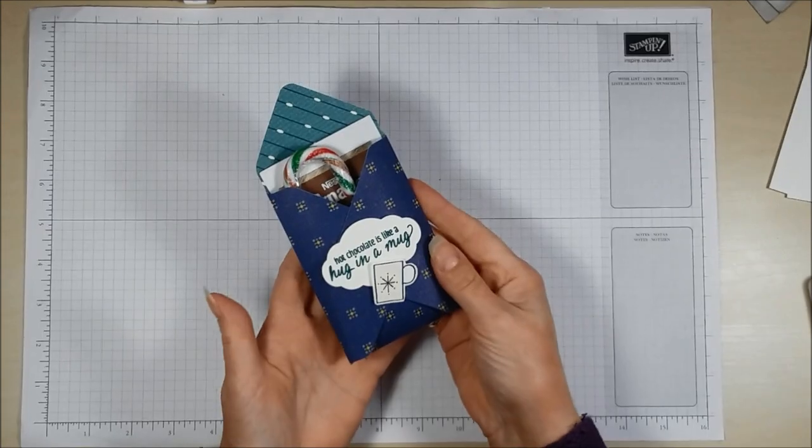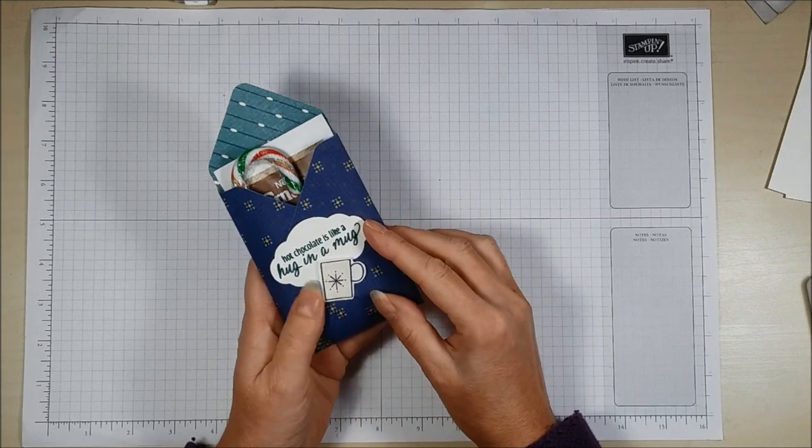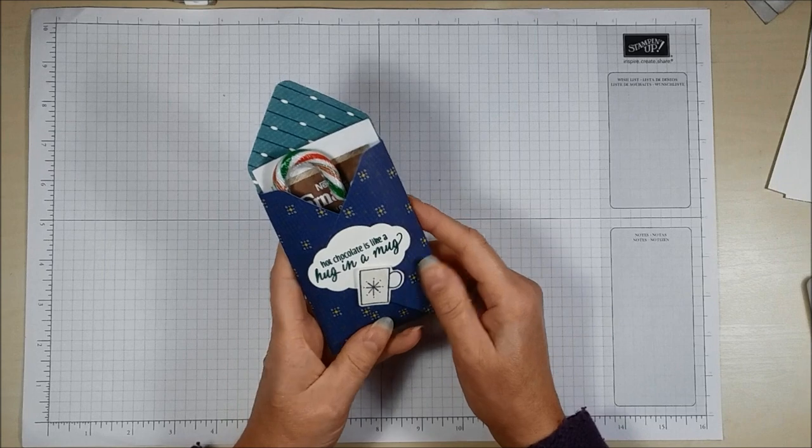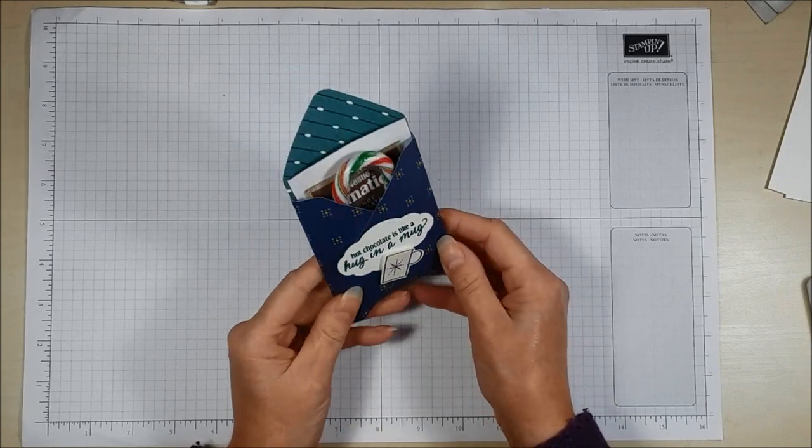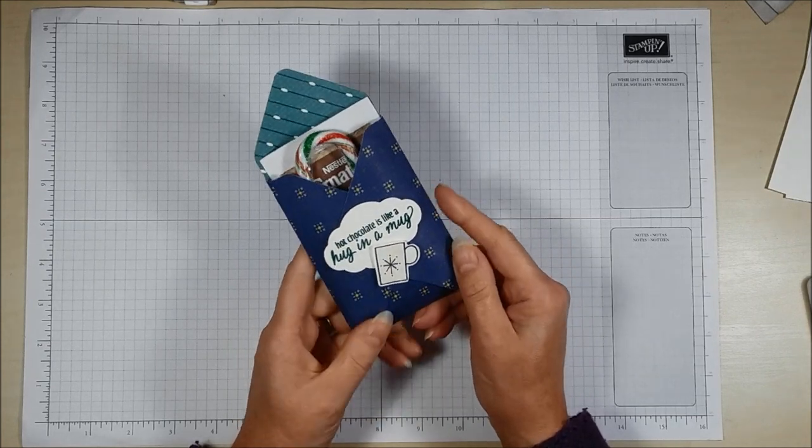Hello there, my name is Tracy Elsom and I'm an independent Stampin' Up demonstrator based in Canada. Welcome to my Paper Craft with Me YouTube channel. Today I have a special request from one of my customers. I made this little gift last year using a stamp set that was available in the holiday catalog of the 2017 holiday catalog, and I have a customer who really liked this particular gift and she's asked me if I can give her some instructions how to make it.